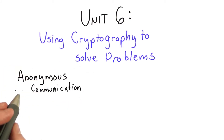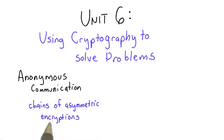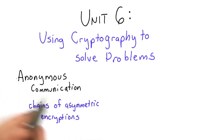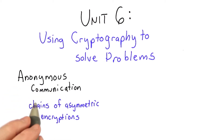The first thing we'll look at is anonymous communication, and we'll learn about how to use a chain of asymmetric encryption to enable two parties to communicate over a network without anyone knowing that they're even talking with each other.